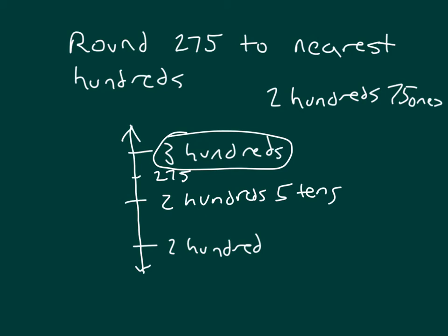And I forgot to put a little S at the end of each of those. So 275 to the nearest hundreds place is 300. It does round to 300.